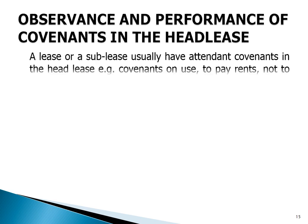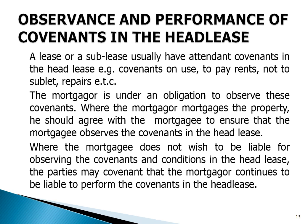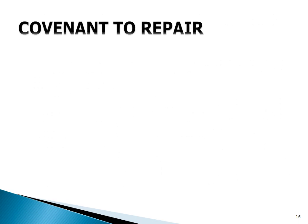Observance and performance of covenants in the headlease: a lease or sub-lease usually has attendant covenants in the headlease, such as covenants on use, to pay rent, not to sublet, repairs, etc. The mortgagor is under an obligation to observe these covenants. Where the mortgagor mortgages the property, he should agree with the mortgagee to ensure that the covenants in the headlease are observed. Where the mortgagee does not wish to be liable for observing the covenants and conditions in the headlease, the parties may covenant that the mortgagor continues to be liable to perform the covenants in the headlease.